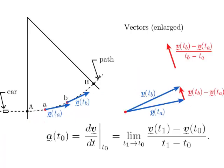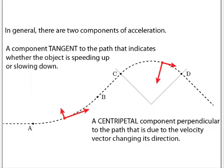Why did we get that? Here's a picture of that first left turn and that first curve. Although the speed of the car is constant, its velocity vector is changing because the direction of travel of the car is changing. And because the velocity vector is changing, we get an acceleration — the centripetal acceleration towards the center.